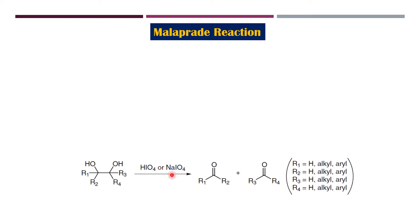Now depending on what R1, R2, R3, R4, as you can see it can be H, alkyl or aryl, for all the R1, R2, R3, R4, your products will be decided. So if you have one alkyl and H, one alkyl and H over here, your products will be both aldehydes.